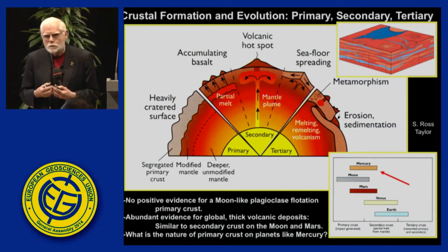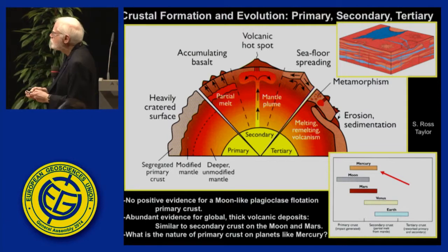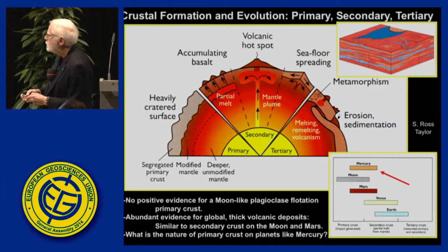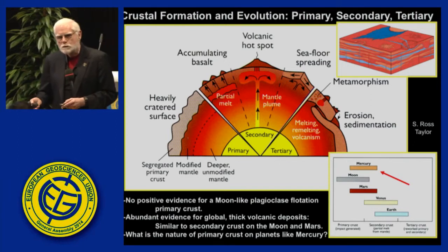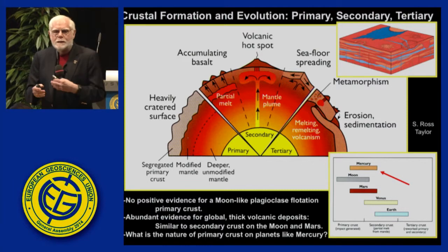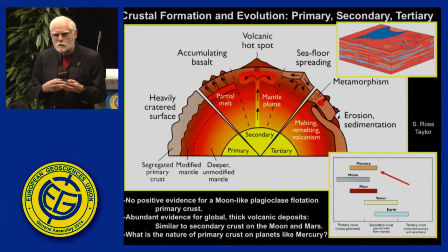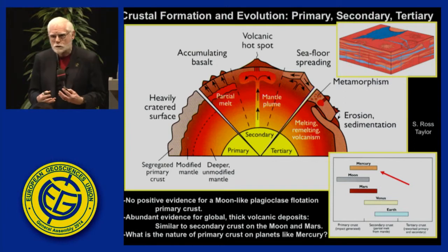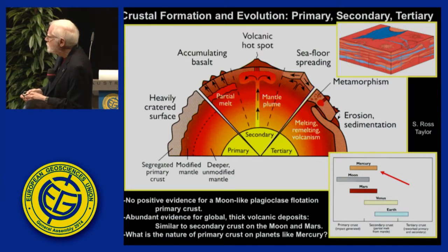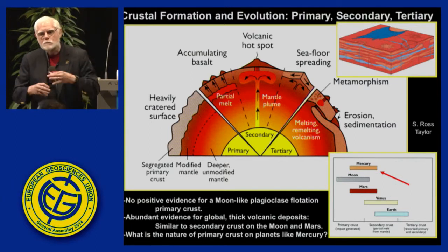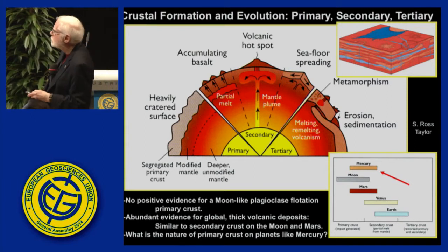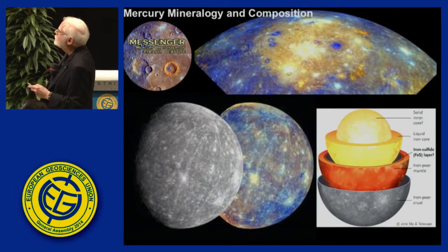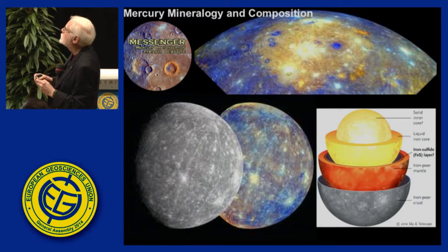Is there a primary crust on Mercury like on the Moon? The answer seems to be no. We don't see evidence for plagioclase feldspar-rich flotation primary crust on Mercury. There's abundant evidence for global thick volcanic deposits similar to secondary crust on the Moon and Mars. Plagioclase flotation turns out to be a function of temperature and pressure regimes, and maybe it doesn't work on other planetary bodies. This is critically important for understanding the nature of primary crusts on planets like Mercury and has huge implications for the early history of planets, particularly the Earth.